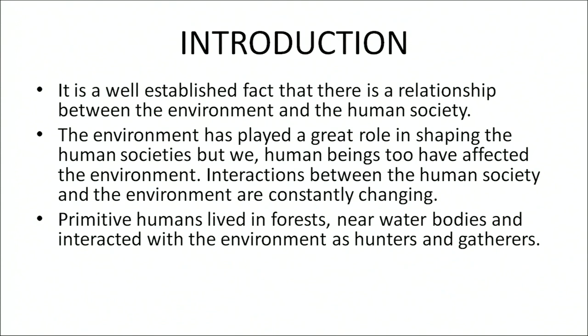Primitive humans lived in forests, near water bodies, and interacted with the environment as hunters and gatherers. Human beings — scientific name Homo sapiens sapiens — evolved more than 2 million years ago. They evolved with a large brain that enabled them to think and use their judgment. Humans walked erect on two legs, which made their hands free to perform manual functions.